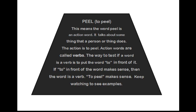To peel. This means the word peel is an action word — it talks about something that a person or thing does. The action is to peel. Action words are called verbs. The way to test if a word is a verb is to put the word 'to' in front of it. If 'to' in front of the word makes sense, then the word is a verb. To peel makes sense. Keep watching to see examples.